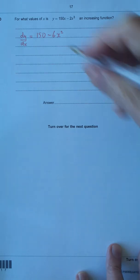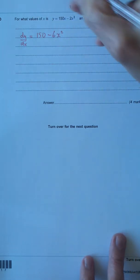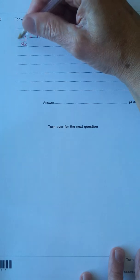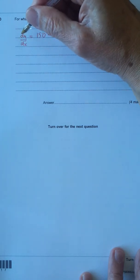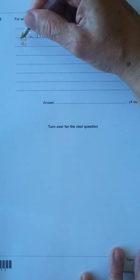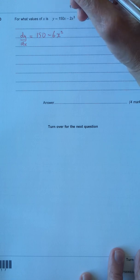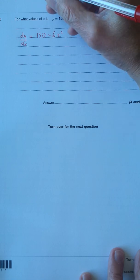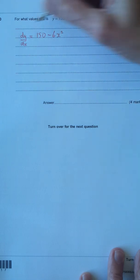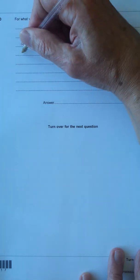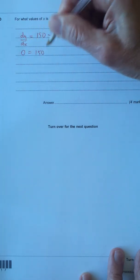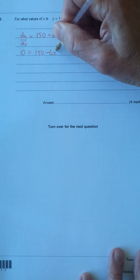Now let's find the turning points. The turning points are when the gradient equals, remember when we differentiate dy/dx that gives the gradient of the tangent, and the turning points are when the gradient is 0 because we'll get a horizontal line. So we'll put 0 equals 150 minus 6x².